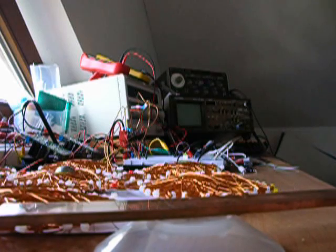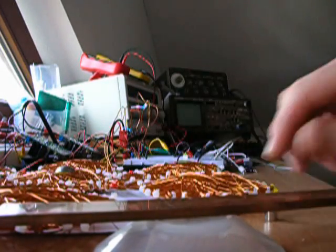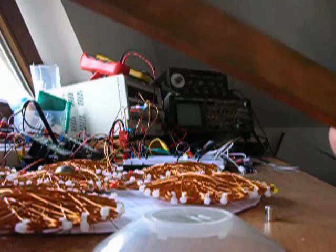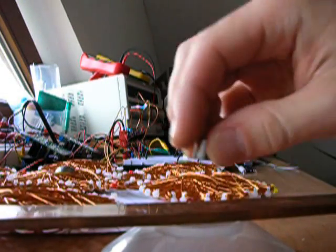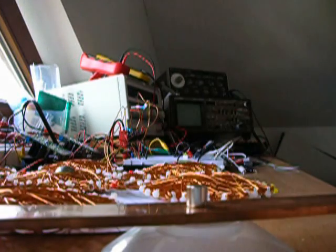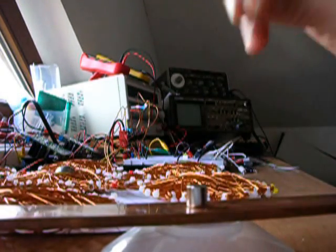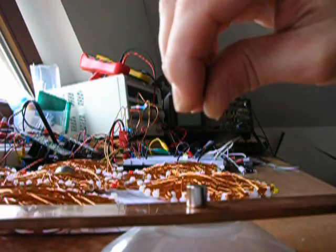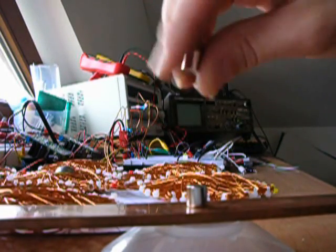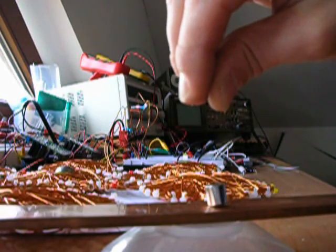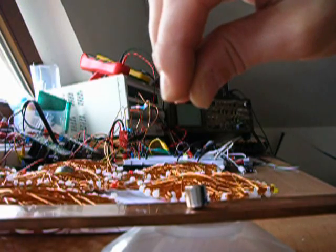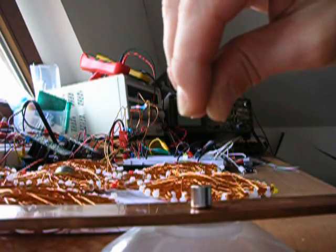The eddy currents can also be nice to play with if you take a thick piece of copper. It also works. This is my magnet here. Now I have another magnet here. You can see, it slows down the movement of the magnet below.